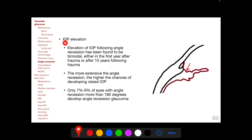Elevation of IOP following angle recession has been found to be bimodal in distribution, occurring either in the first year following trauma or after 10 years. The more extensive the angle recession, the higher the chances of developing increased IOP. However, only 7–9% of eyes with angle recession of more than 180 degrees ultimately develop angle recession glaucoma. So while angle recession is very common following blunt trauma, only a minor proportion of patients ultimately develop glaucoma.